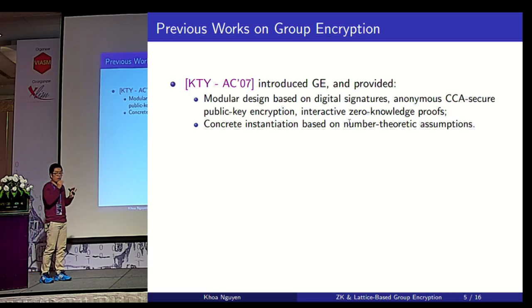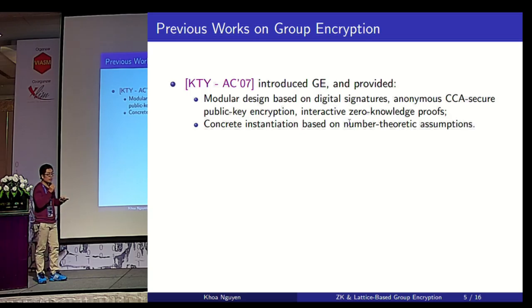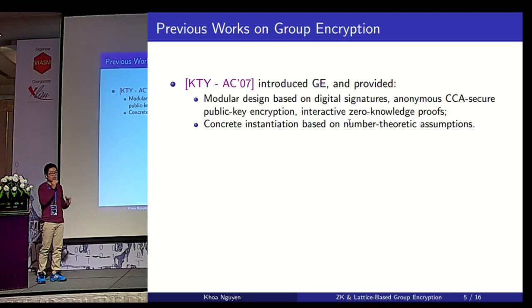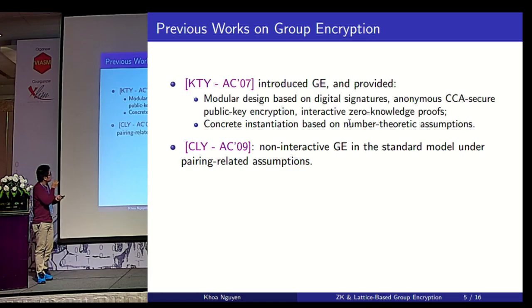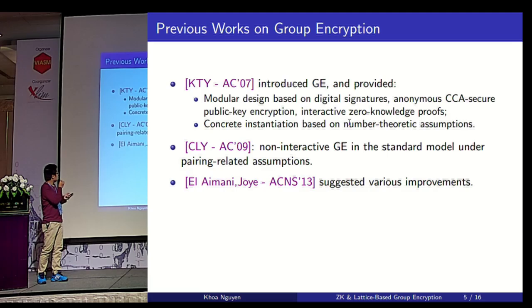Let me briefly review some previous work on group encryption. In the work that introduced group encryption, KTY also provided a modular design based on ordinary digital signatures, anonymous secure public key encryption, and interactive zero-knowledge proofs. They also demonstrated a concrete instantiation based on a number of theoretical assumptions. The KTY scheme only considered interactive settings, but the scheme can be made non-interactive in the random oracle model via the Fiat-Shamir heuristic. Two years later, Cathalo and Libert introduced a non-interactive construction that is secure in the standard model under pairing-based assumptions.